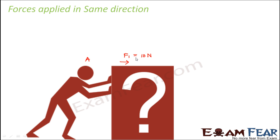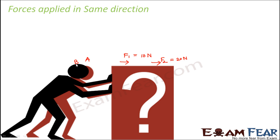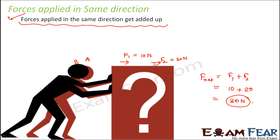Person A applies a force of 10 Newtons on the box. Now let us suppose there is another person B who is also pushing the box in the same direction, applying a force of 20 Newtons — greater than person A. In this case, what will be the total force on the box? The net force will be F1 plus F2, equal to 10 plus 20, that is 30 Newtons. So forces applied in the same direction get added up.